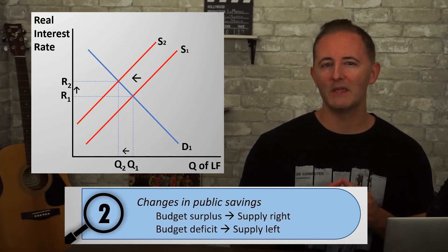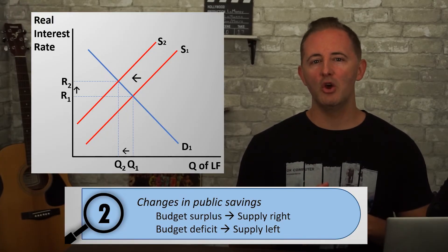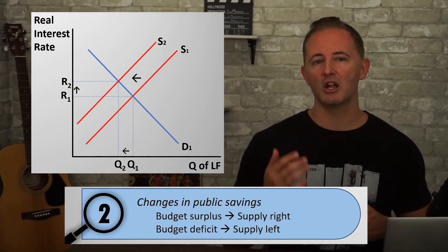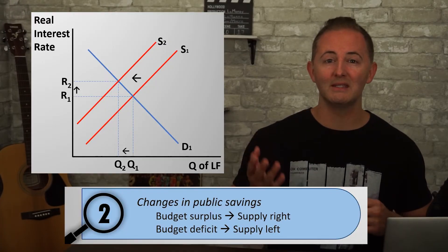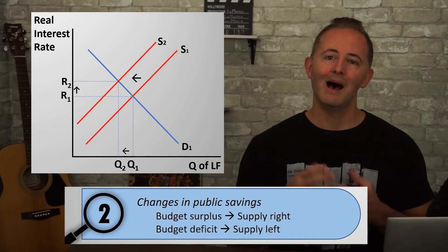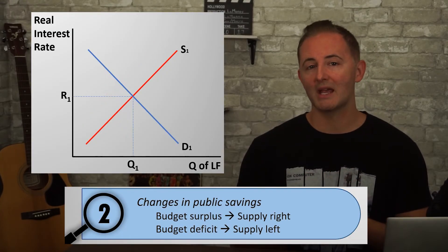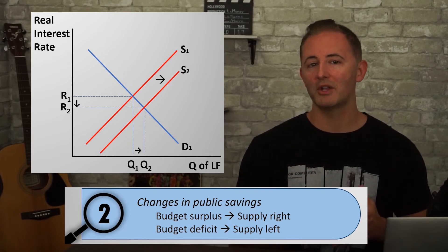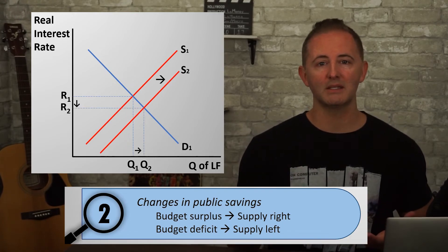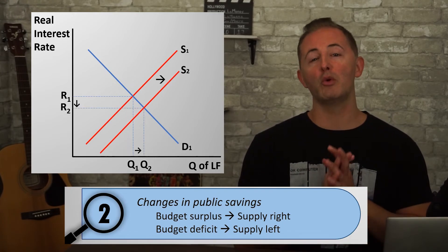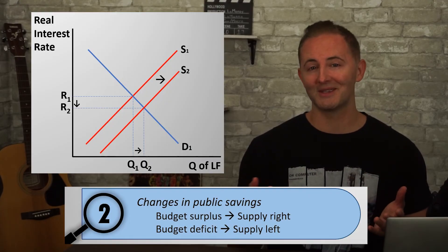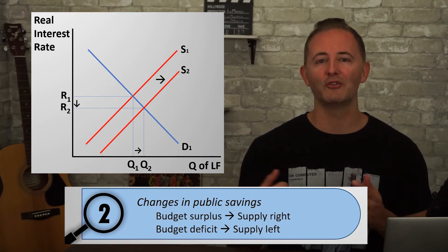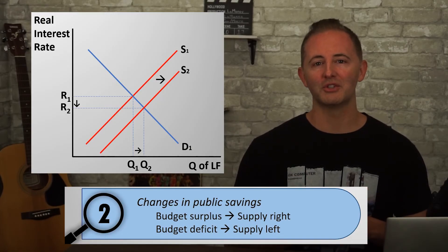We'll deal with this more in Unit 5, but notice that this basically means the result of expansionary fiscal policy is to raise the real interest rate. On the other hand, if the government raised taxes and reduced its spending, it would run a smaller deficit or even a bigger surplus, and if this happened it would shift the supply curve to the right, lowering the real interest rate.